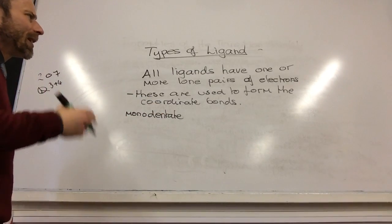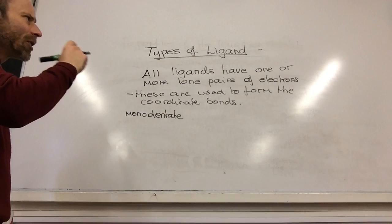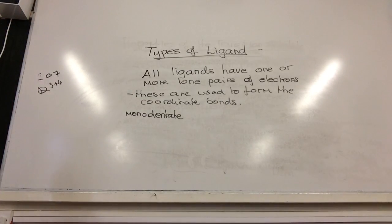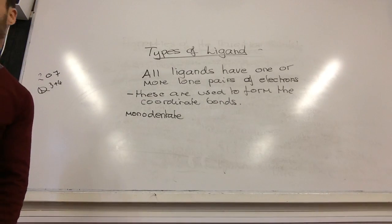So we're going to go through different types of ligands. The ligands are classified by the number of lone pairs they have, so the number of dative covalent bonds that they can do.